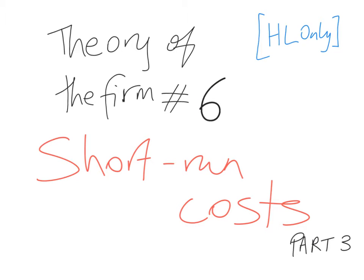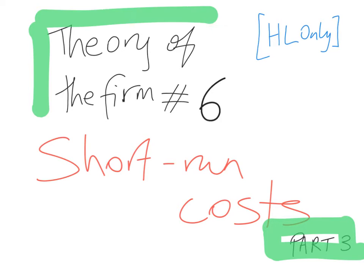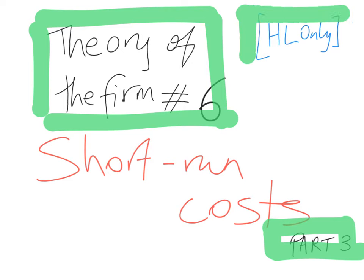This is part 3 of the short run costs of production. Hopefully it is the last part of the short run costs mini-series, and this is video number 6 in theory of the firm. This is all in IB economics, higher level only, for microeconomics.